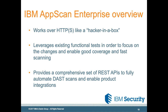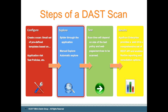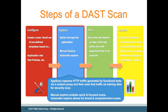AppScan Enterprise provides a comprehensive set of REST APIs to automate this. The steps involved in a dynamic scan are: first, configuring the scan; then the explore phase, where we can either spider through a site or focus the scan on a particular area. We'll use an AppScan proxy to pipe Selenium functional tests through the proxy, capture that data, and focus the scan on that set. Once we have the pages to focus on, we run a test defined by the test policy, and finally get a set of results that we can act on.